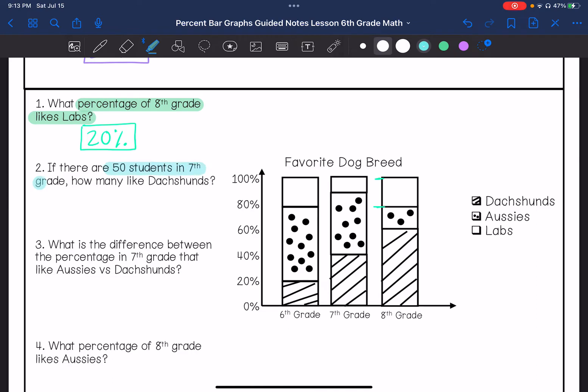If there are 50 students in seventh grade, how many like Dachshunds? So we have 50 students in seventh grade, we are going to know the percentage. Seventh grade likes Dachshunds, that's going to be 40%. This is divided by 2, so 40 divided by 2 is 20, so 20 students.